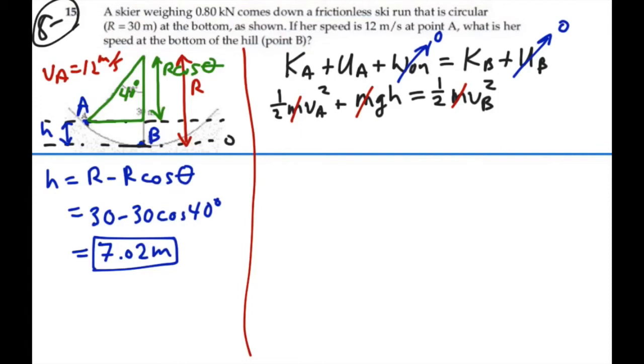This is not always possible, but it's great to have now. Let's multiply both sides by two and take the square root. So we have the velocity at B is going to equal the velocity at A squared plus 2GH, all square root.